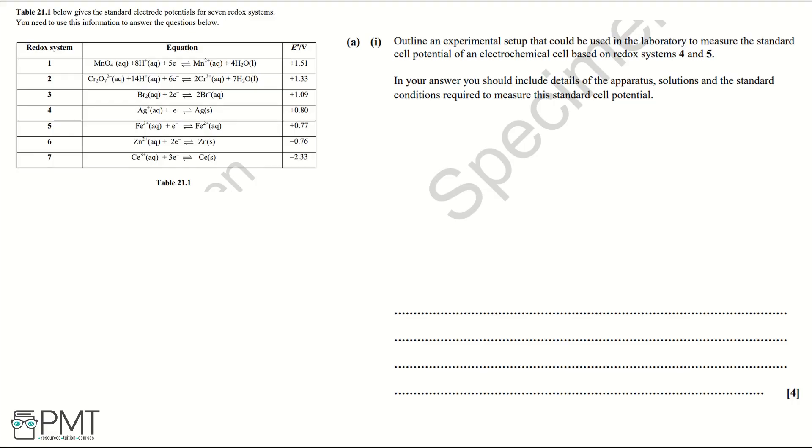The general setup for measuring a cell potential is you're going to have two beakers with two electrodes in, and these electrodes are going to be connected to a voltmeter. Connecting the two beakers you're going to have a salt bridge. So you need to label all of this in your diagram.